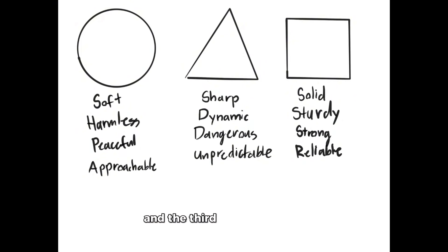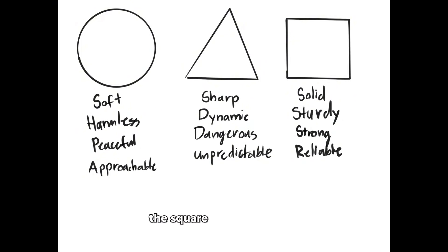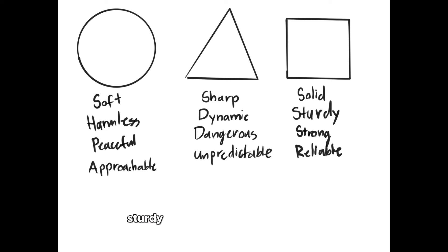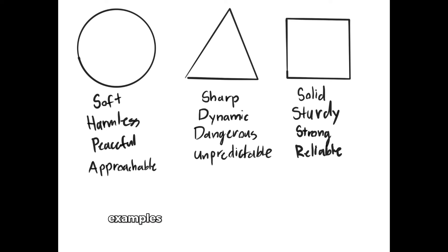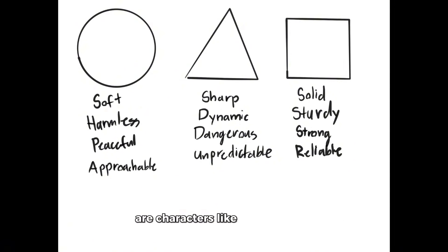The third and final shape, the square, represents solid, sturdy, strong, and reliable qualities. Examples of characters with these shapes are characters like Mr. Incredible from the movie Incredibles.